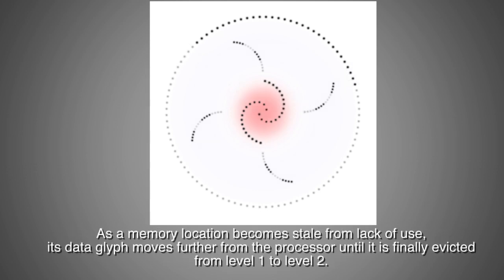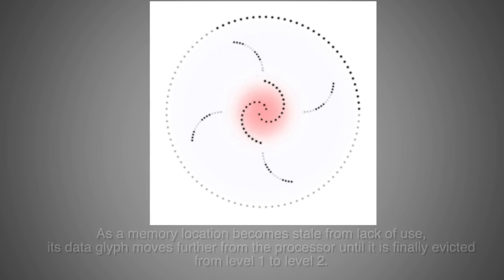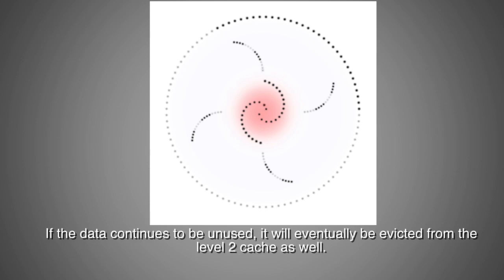As a memory location becomes stale from lack of use, its data glyph moves further from the processor until it is finally evicted from level 1 to level 2. If the data continues to be unused, it will eventually be evicted from the level 2 cache as well.